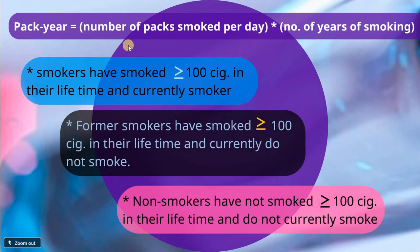To summarize: current smokers have smoked more than 100 cigarettes in their lifetime and are still smoking. Former smokers have smoked more than 100 cigarettes and have now quit. Non-smokers have not smoked more than 100 cigarettes in their lifetime and are currently non-smokers.